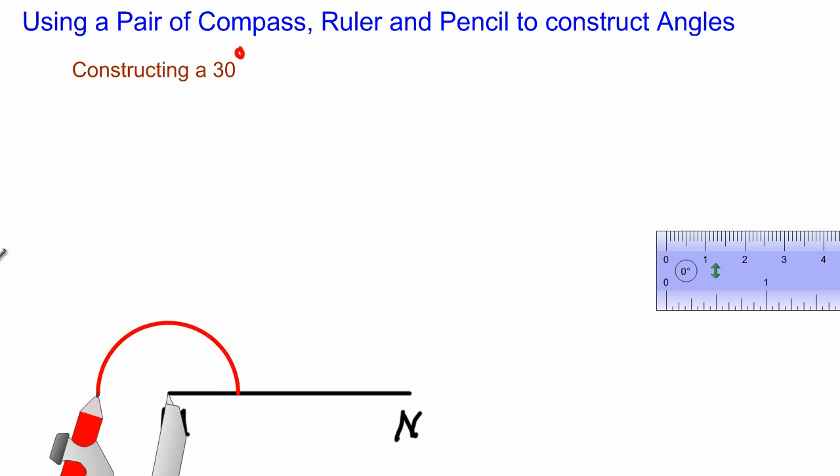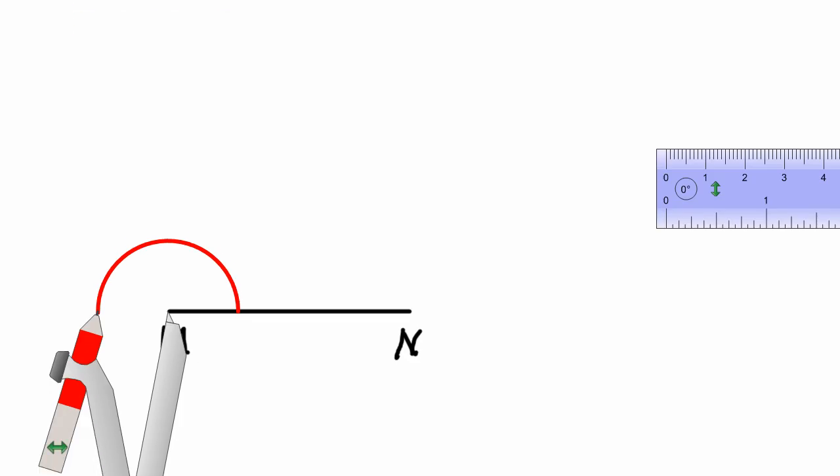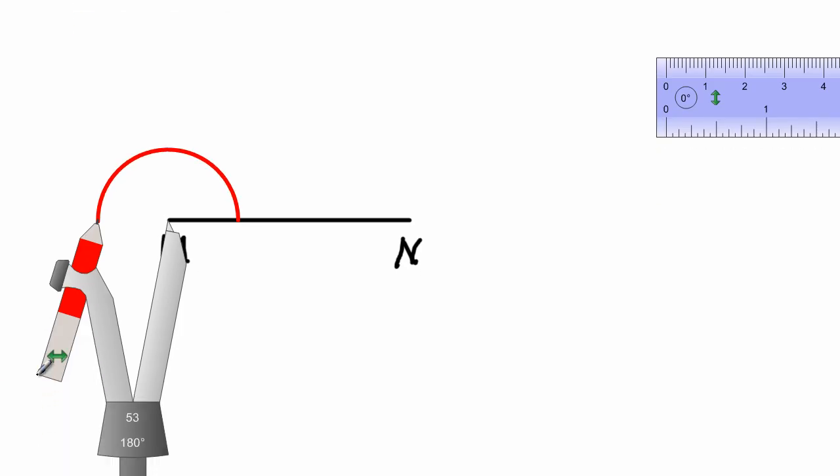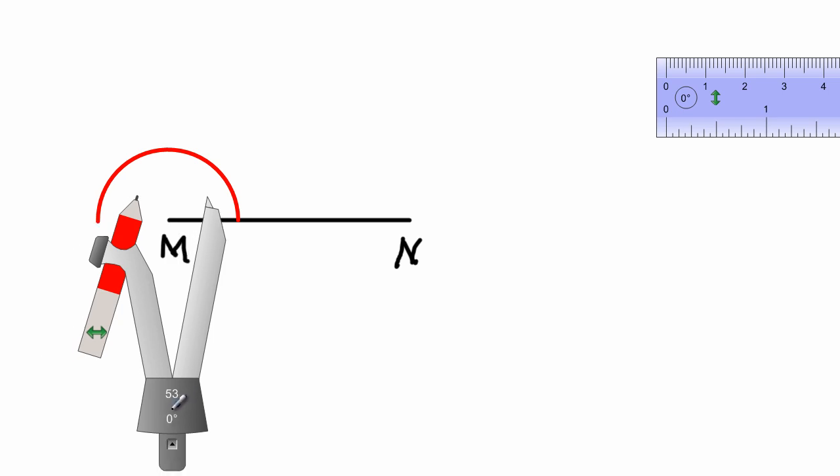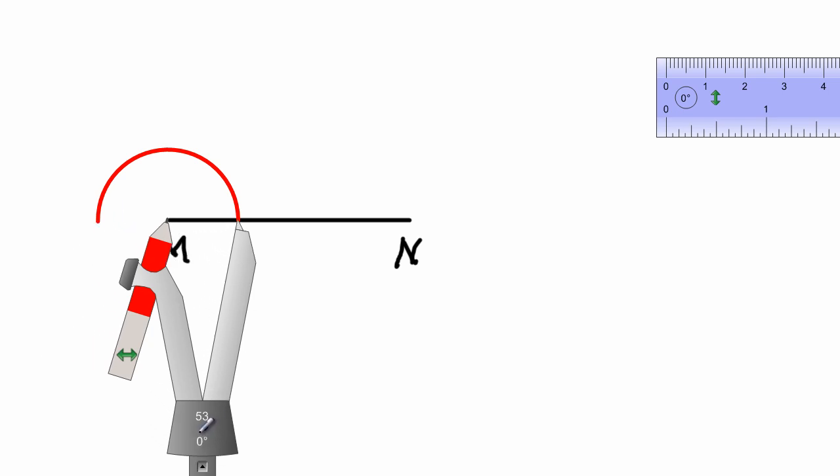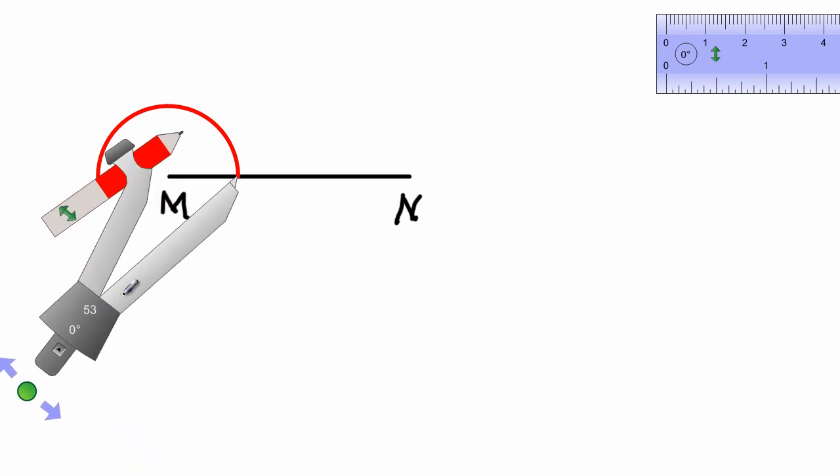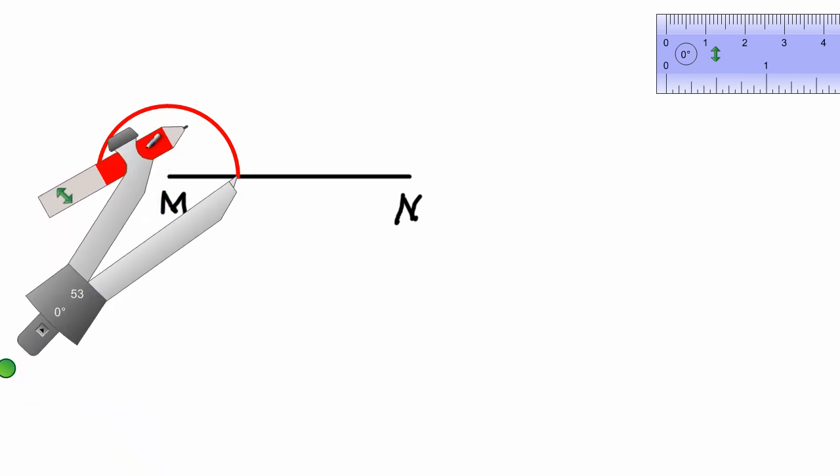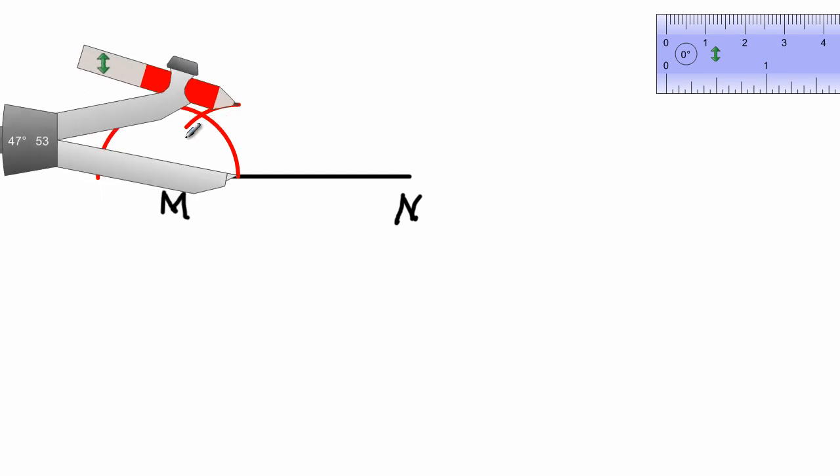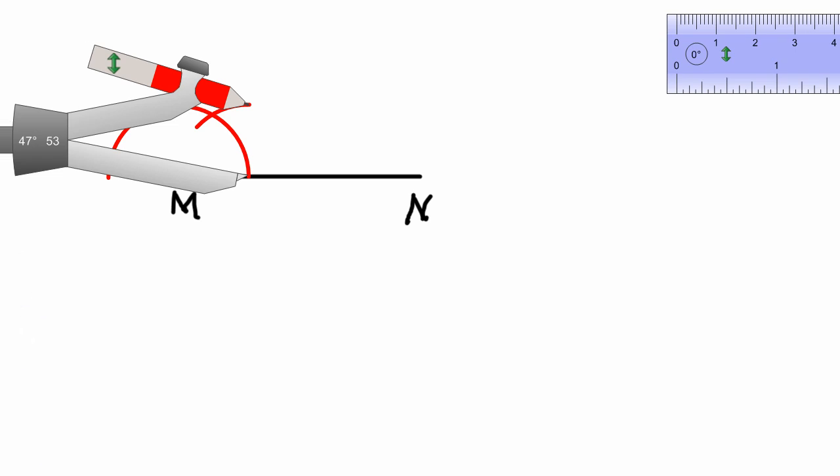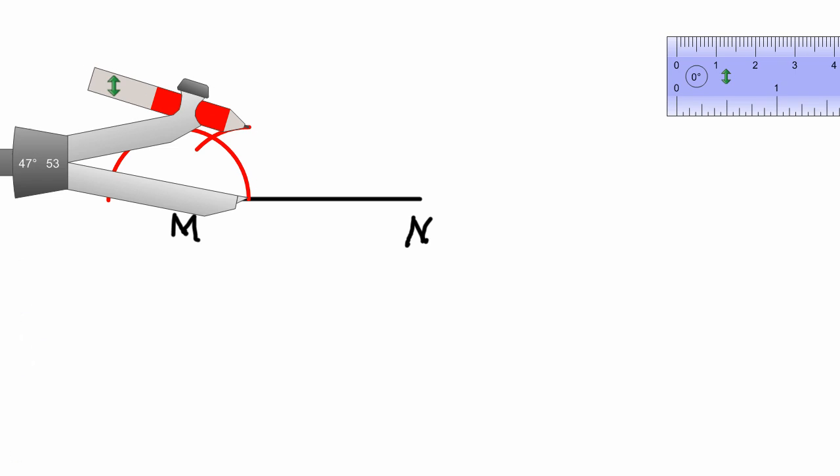Okay, good. Now after I've completed that task, now what I need to do, I need to take up my compass and I'm going to place it at the point of intersection where the arc intersects the line segment MN. And I am going to take my compass around and I'm going to swing an arc that cut the first arc that I swung before. Now after I've completed that task, what I need to do now.